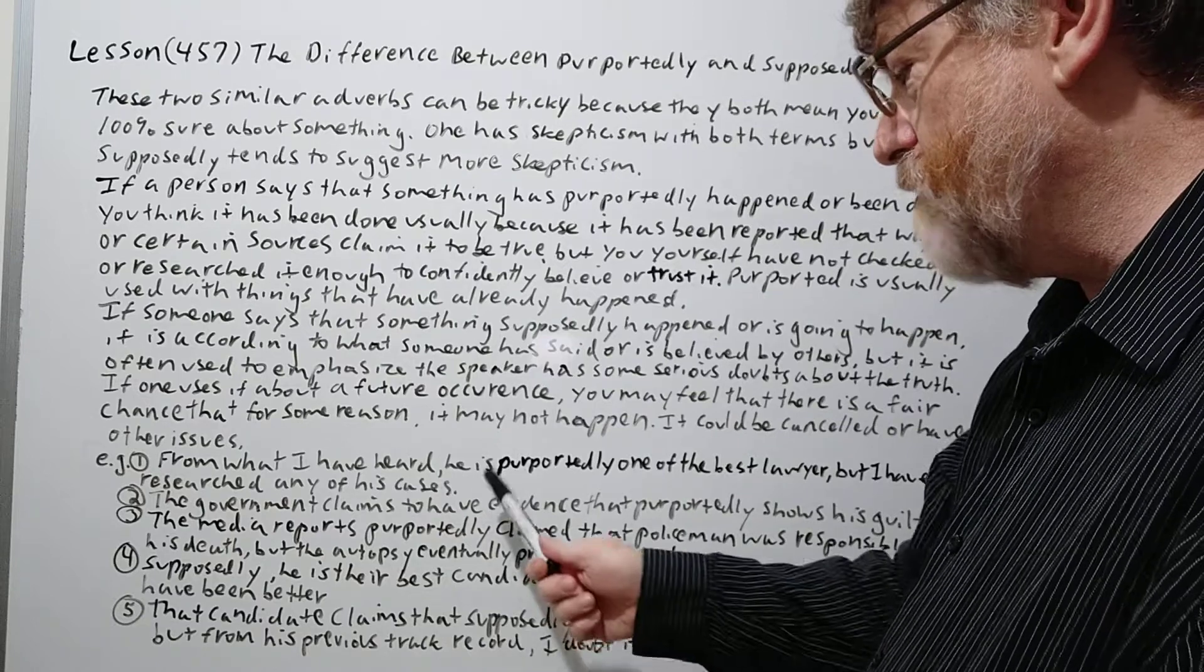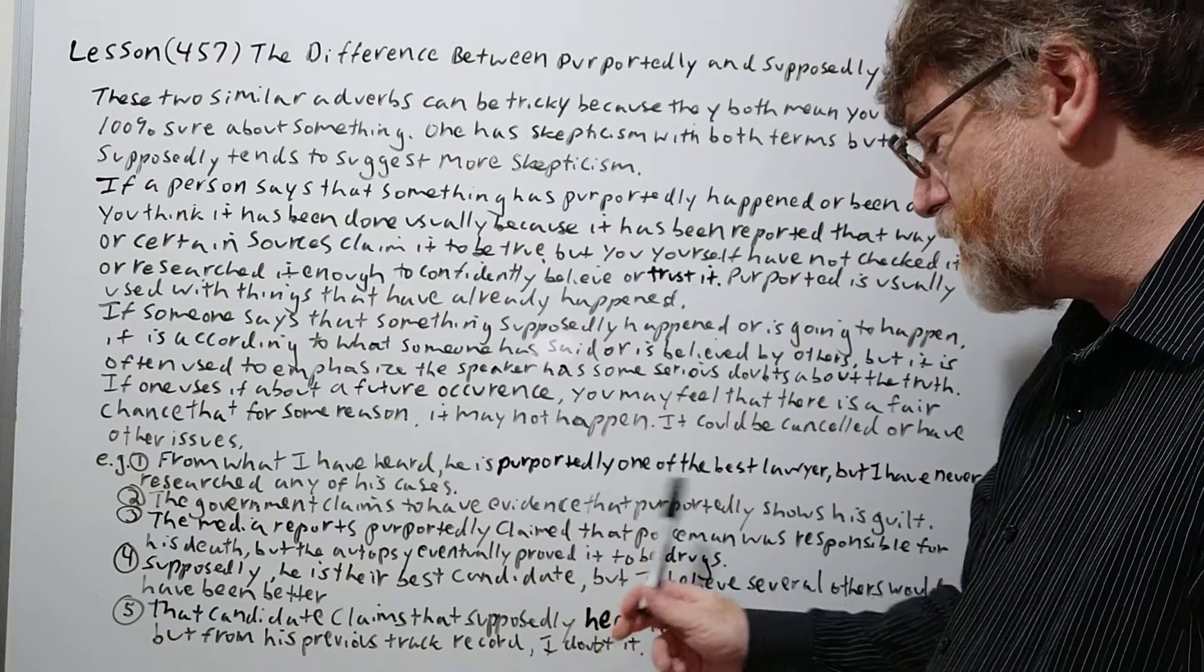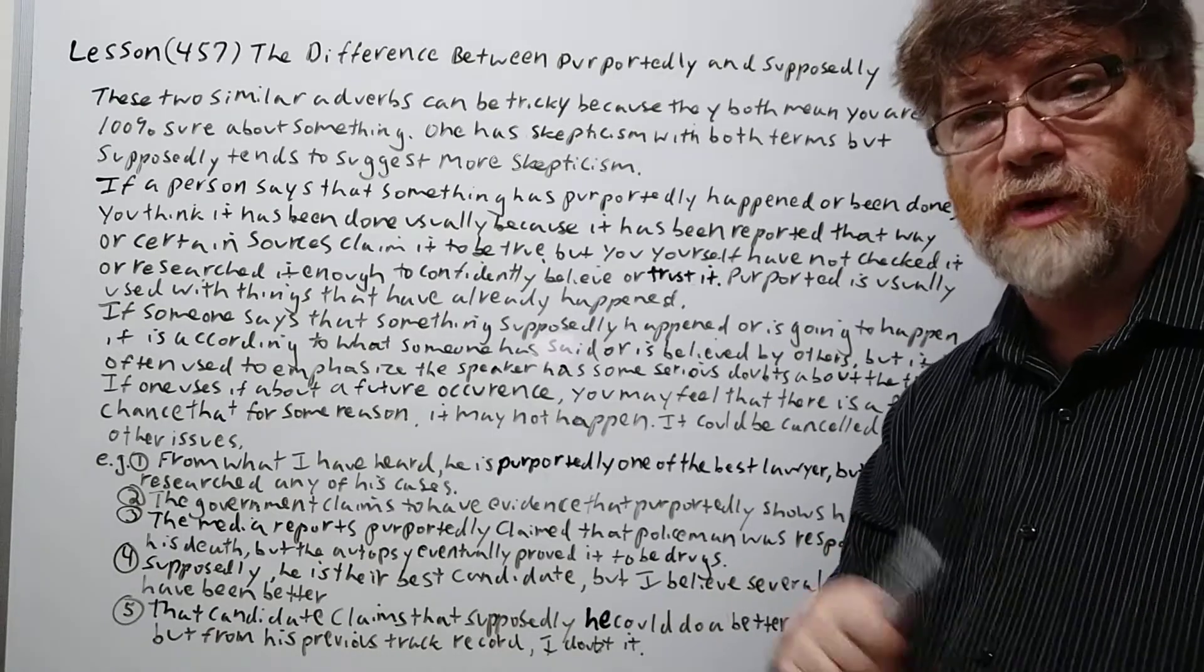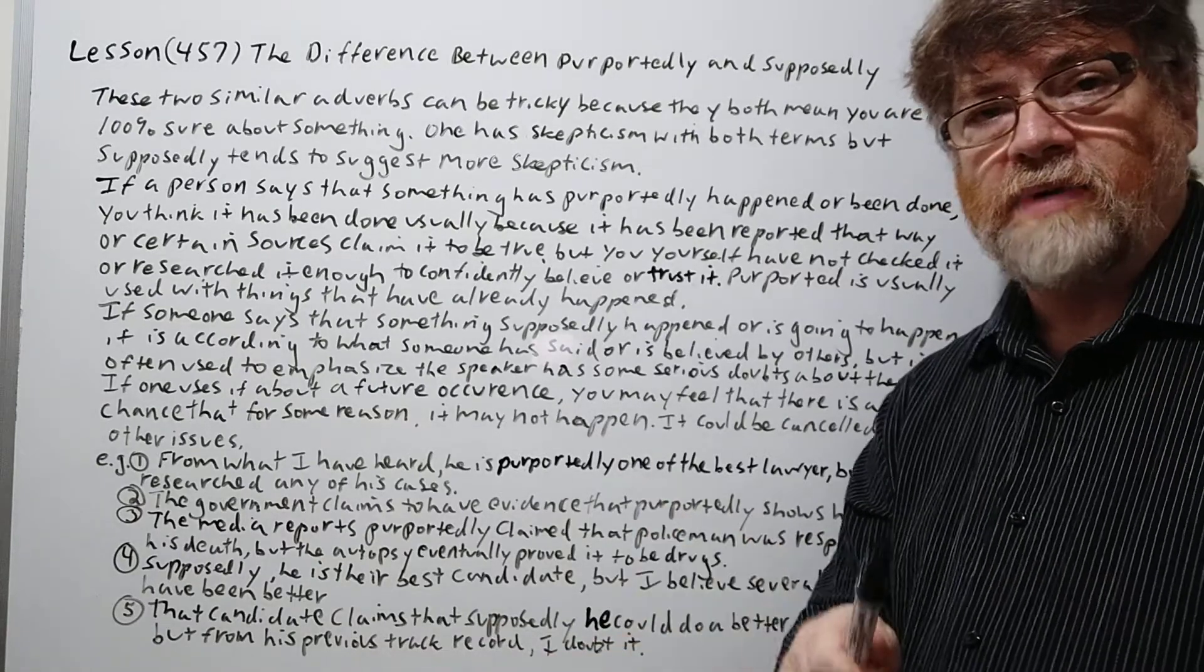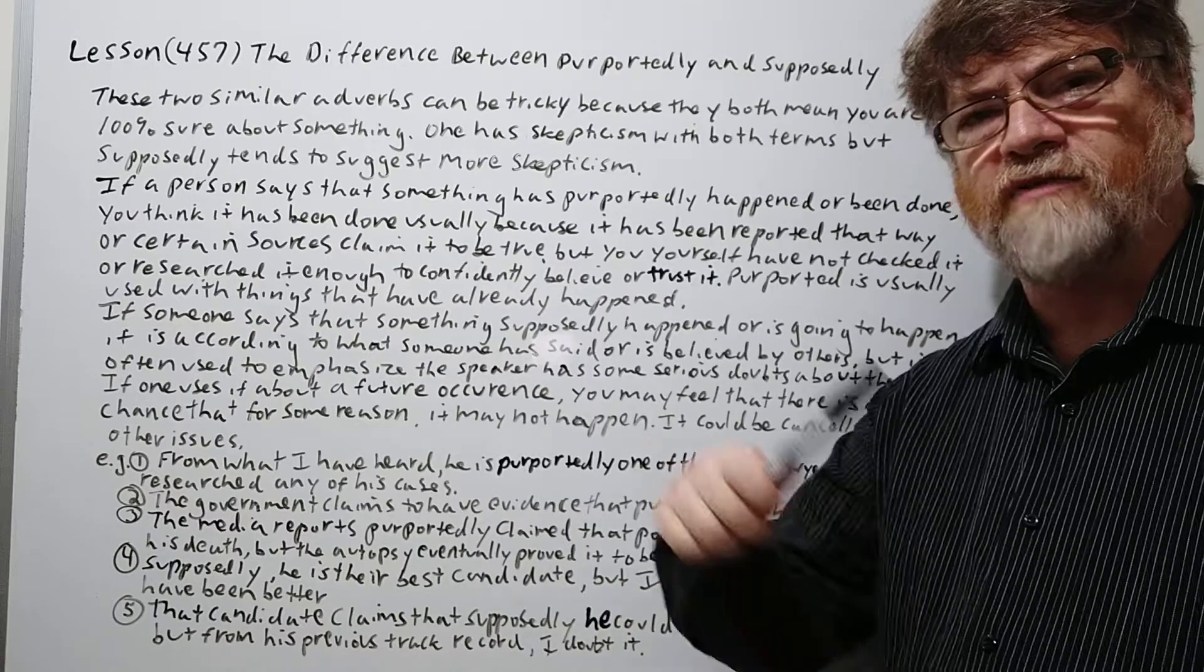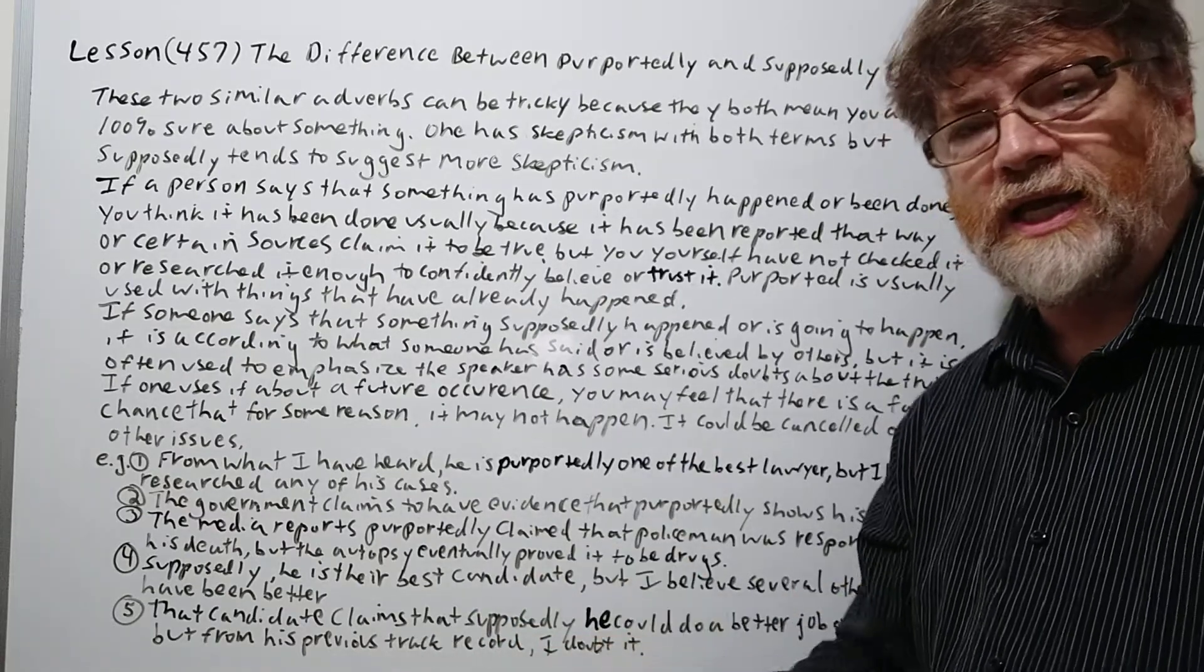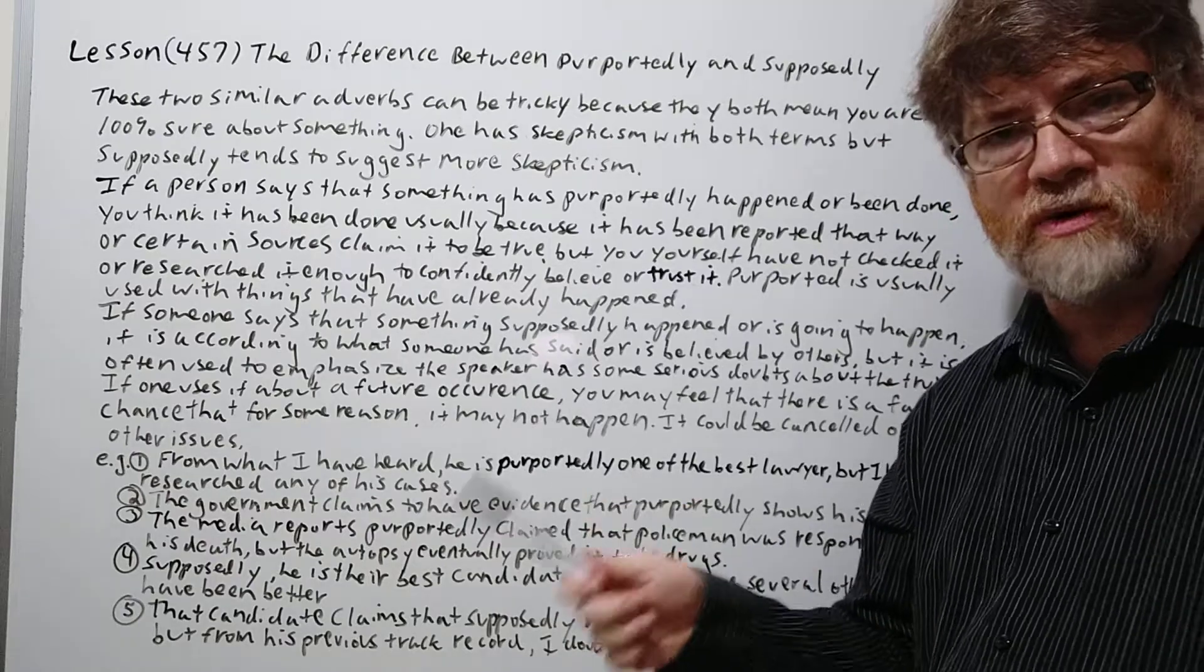Number two. The government claims to have evidence that purportedly shows his guilt. All right. Now in this case you are reporting that it's been reported that way, but it probably means the government hasn't revealed this evidence yet. So if it hasn't revealed it yet, you can't really be a hundred percent sure about it.